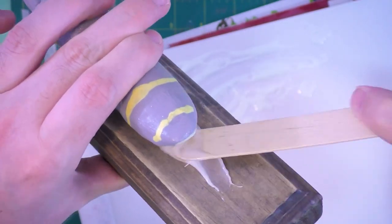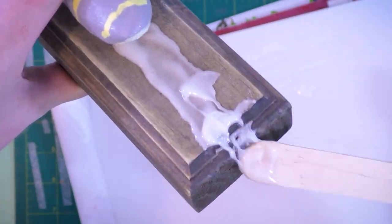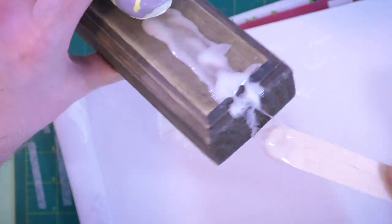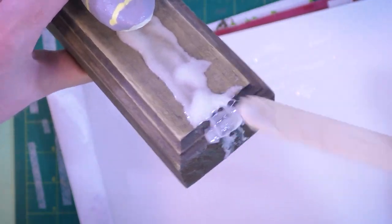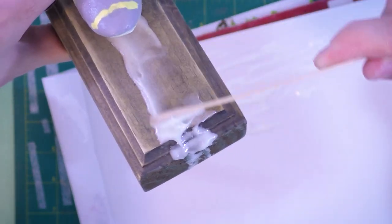As I apply the mixed epoxy I'm going in one direction away from the slug so this way it'll create an implied motion, as in the slug moved in that direction to be where it is on the base.